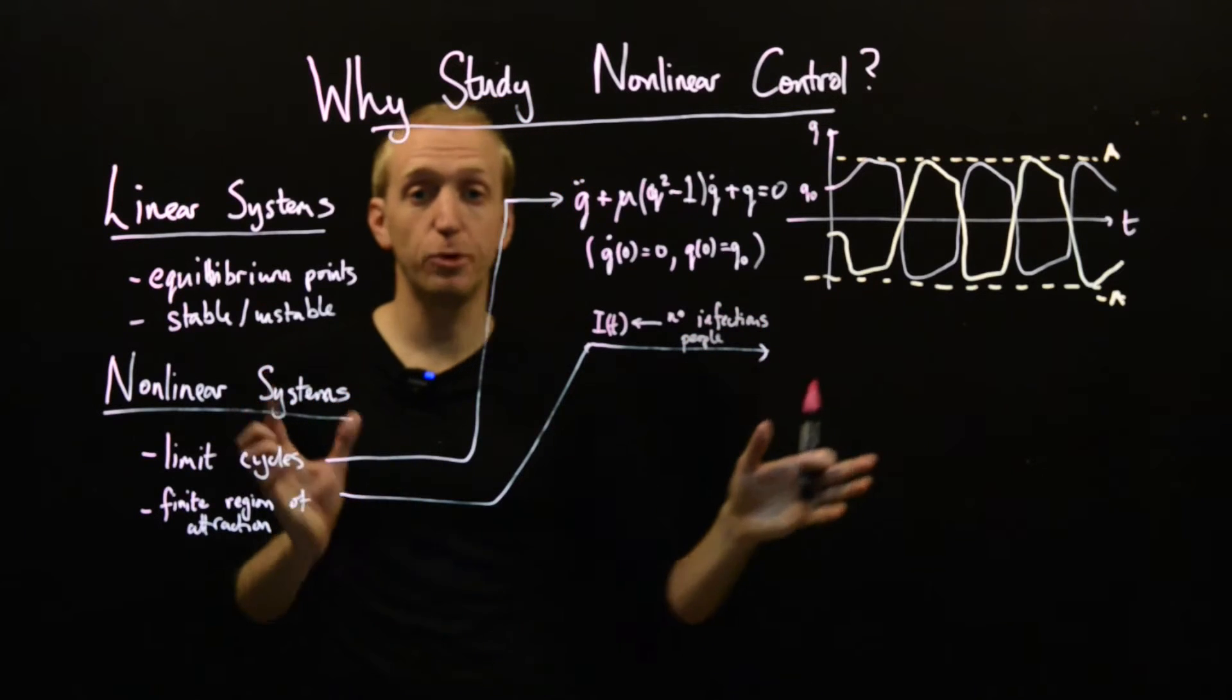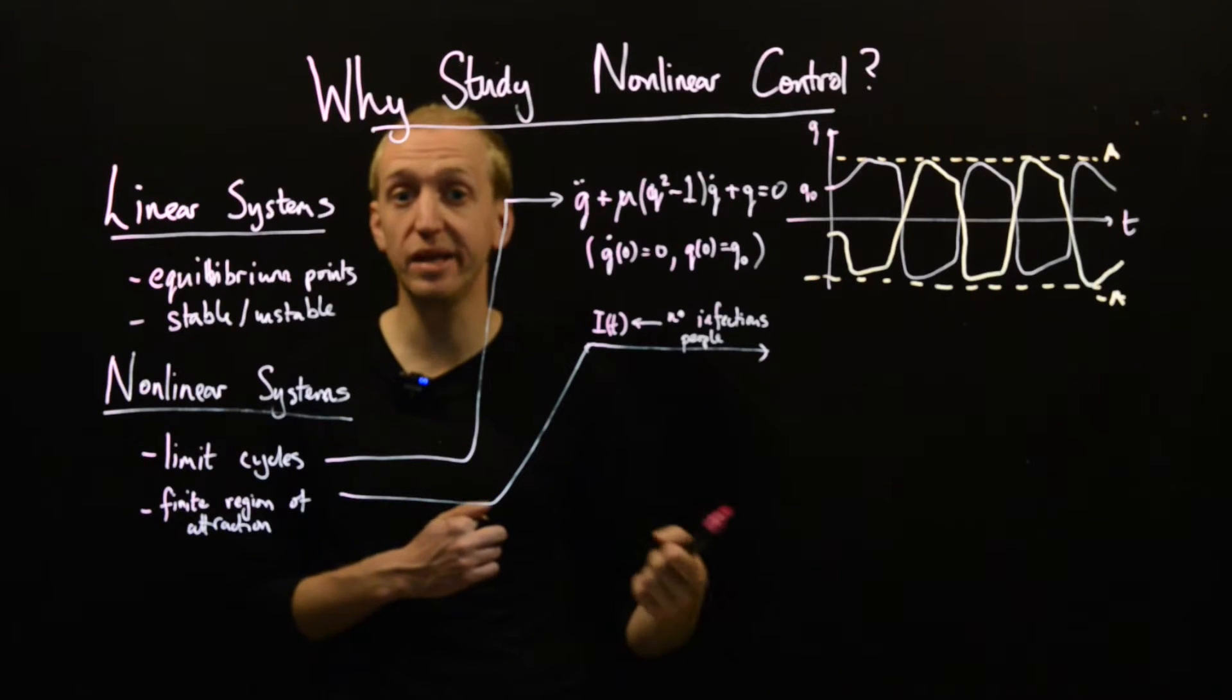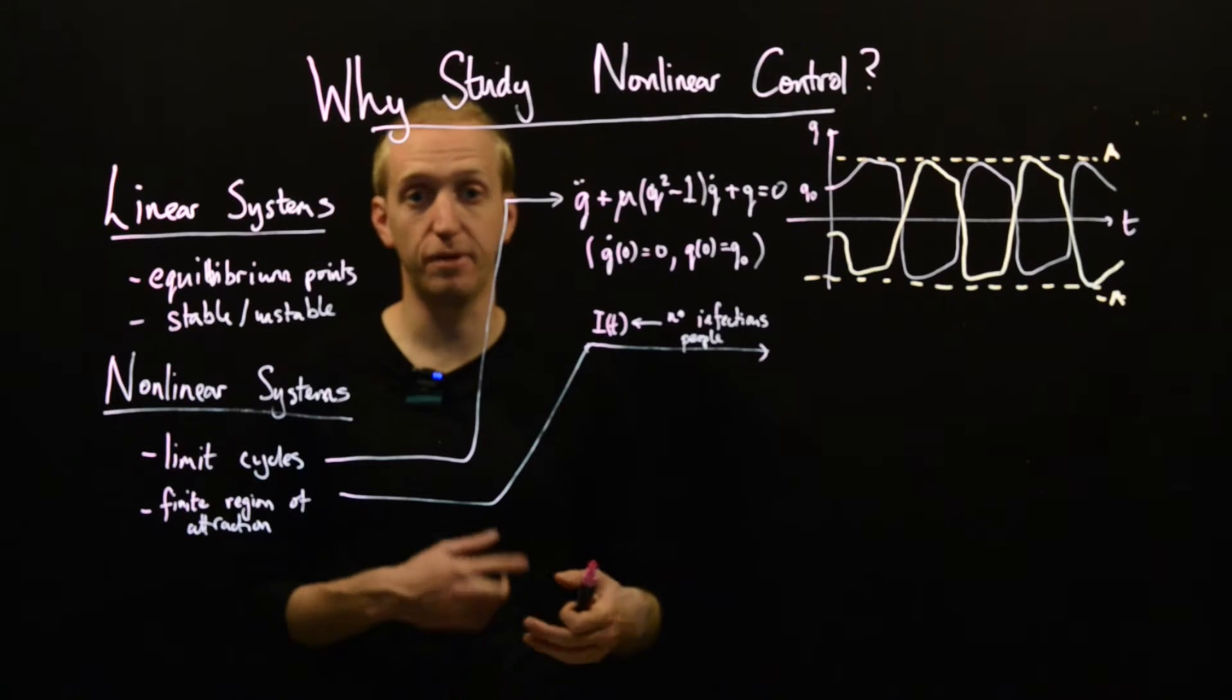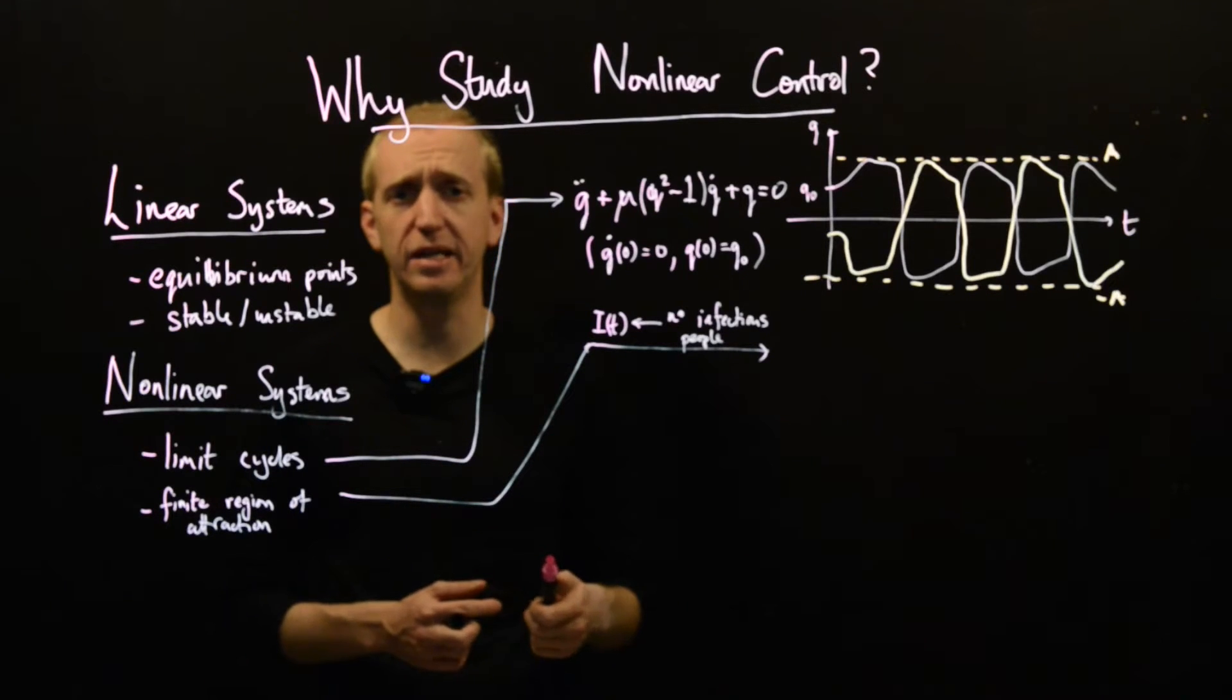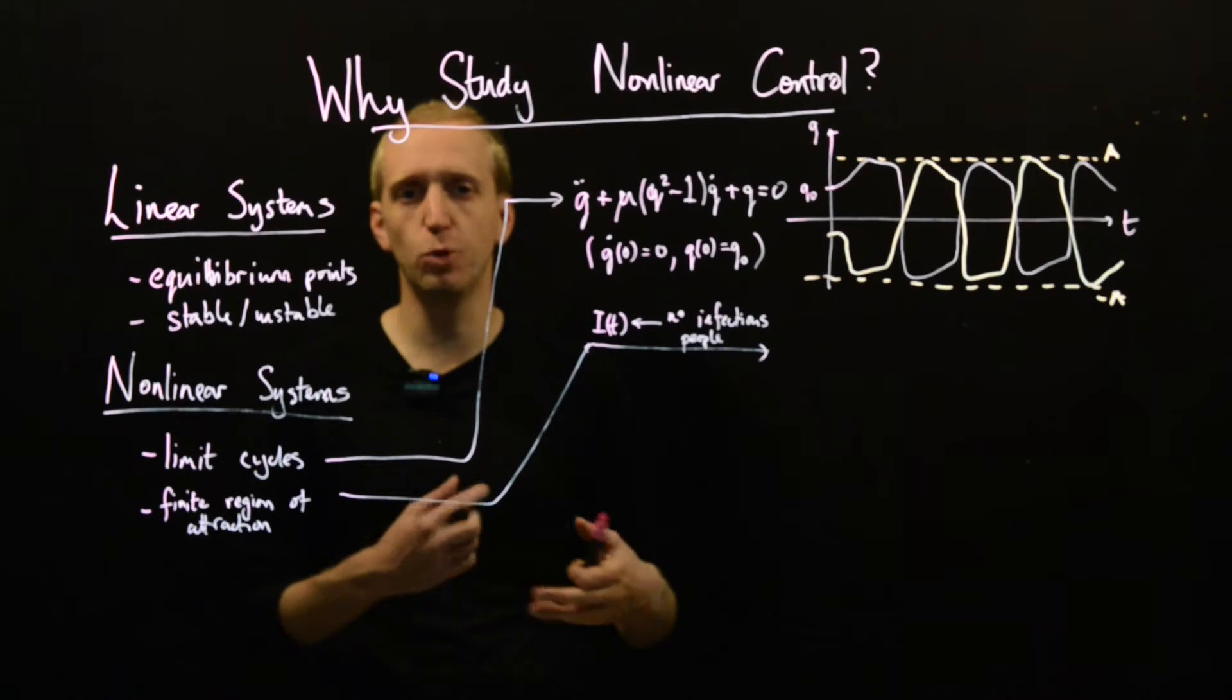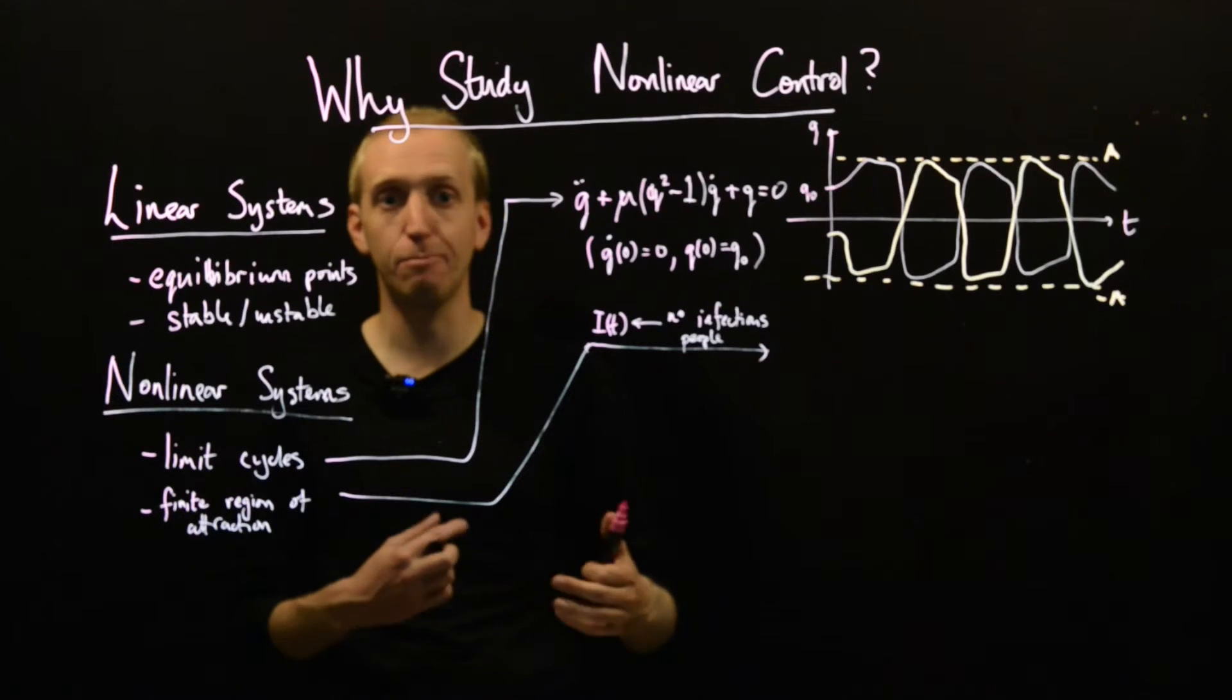And so, we have some disease spreading through a population. And let's say we also have some test and trace system that's going away and testing people who we think are infectious and then isolating them if the test says yes. And now let's just try to imagine how a system like this might behave. So, the key thing to think about is do you think this system will be able to cope with arbitrary number of cases? So, if we have a lot of infectious people that we need to test and trace, what's going to happen?